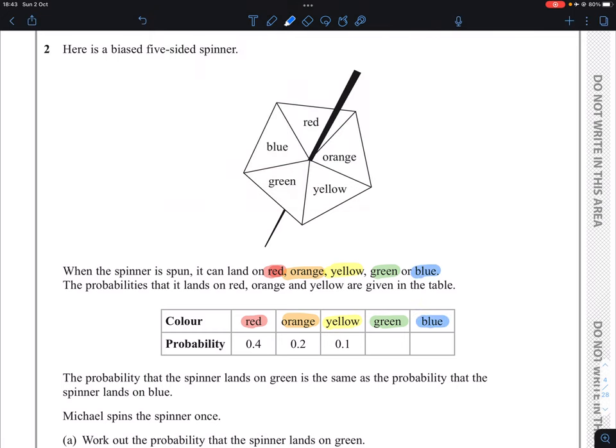We have the probabilities for three of them already given: red, orange, and yellow. The probability that the spinner lands on green is the same as the probability that the spinner lands on blue. So whatever number is in green and blue, they must equal each other.